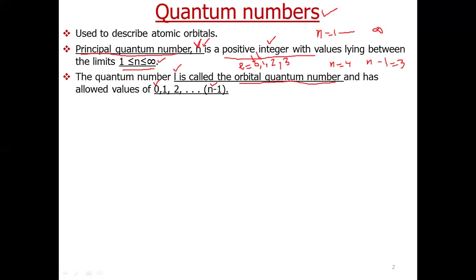So l can be either 0, 1, 2, or 3 when n equals 4. The value of l tells us about the orbital in which the electron is present. For l = 0 we denote that orbital with small s; l = 1 is denoted by small p; l = 2 is denoted by small d, and so on.